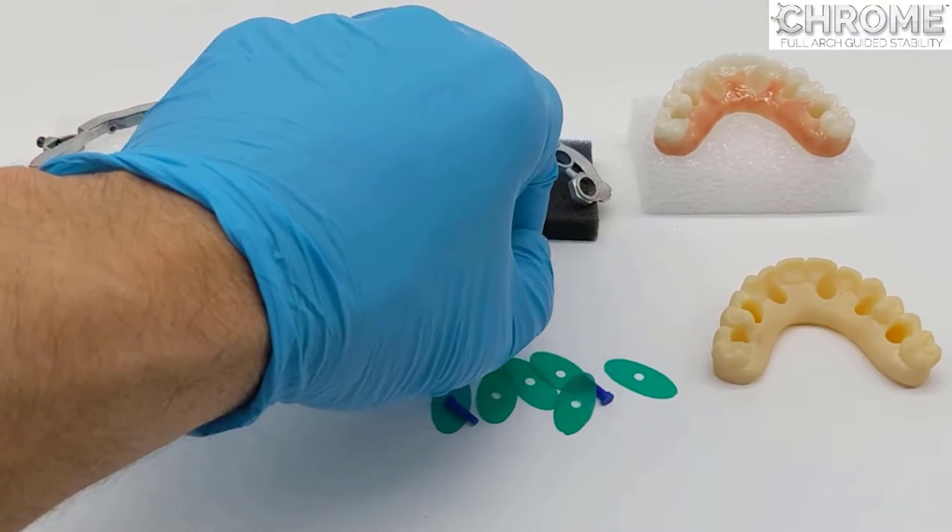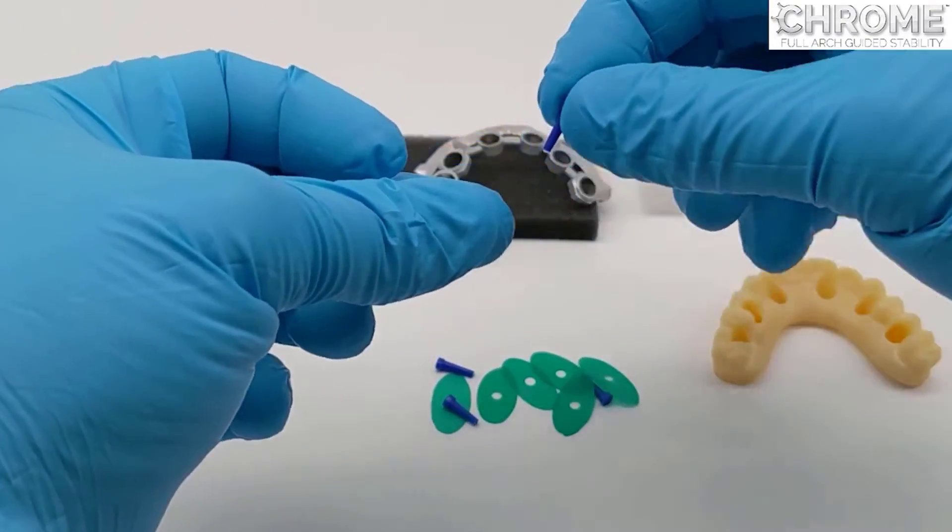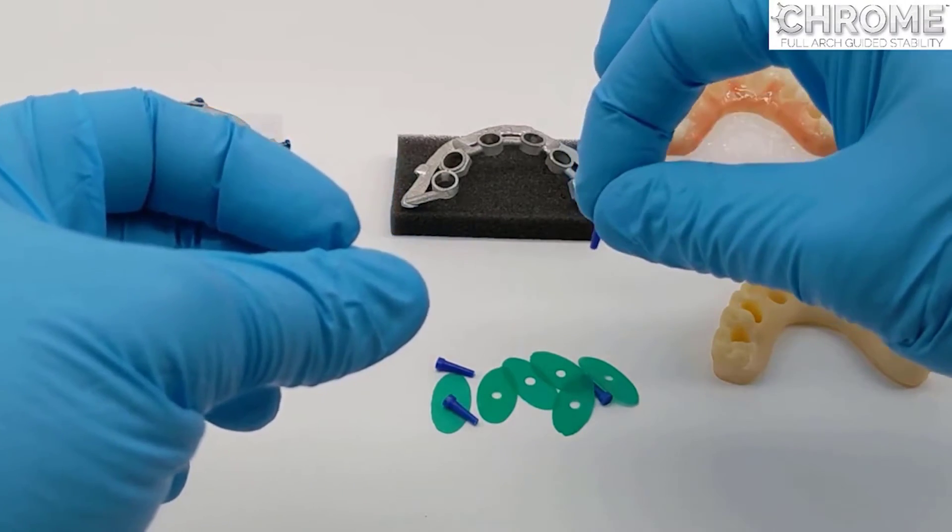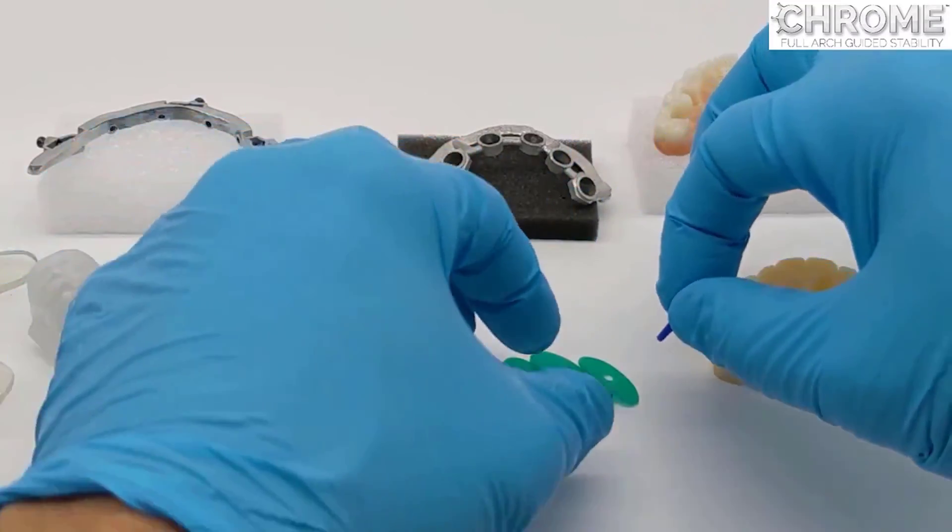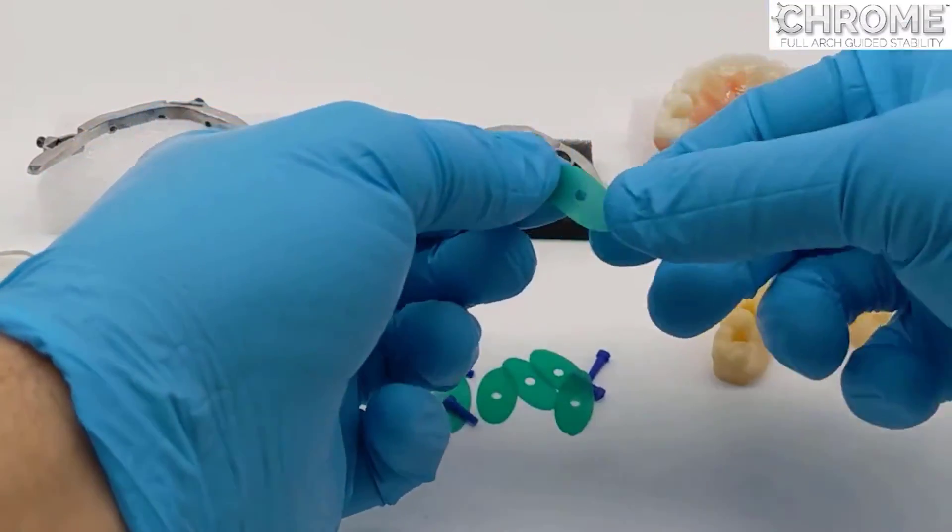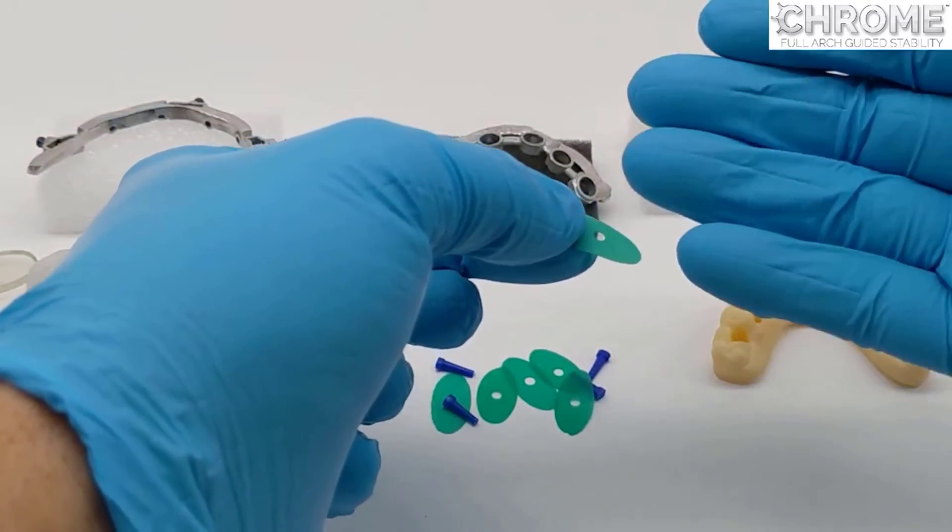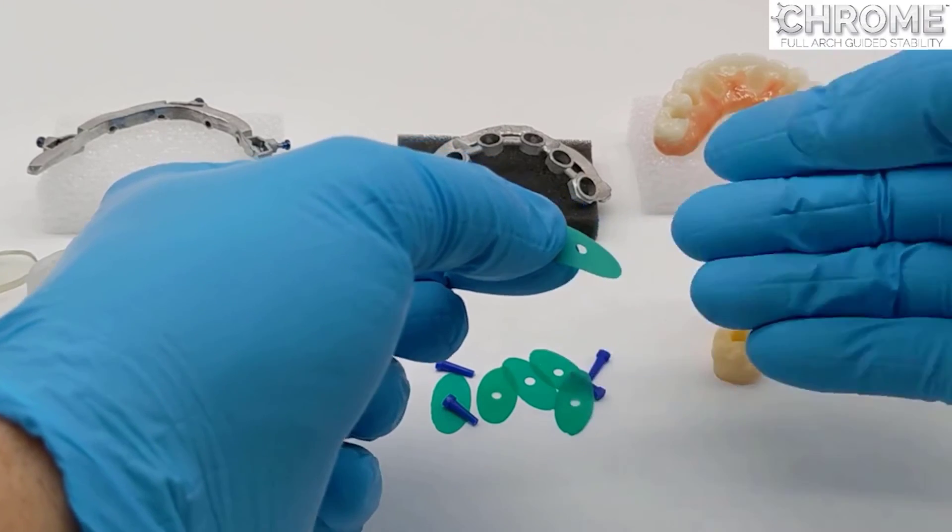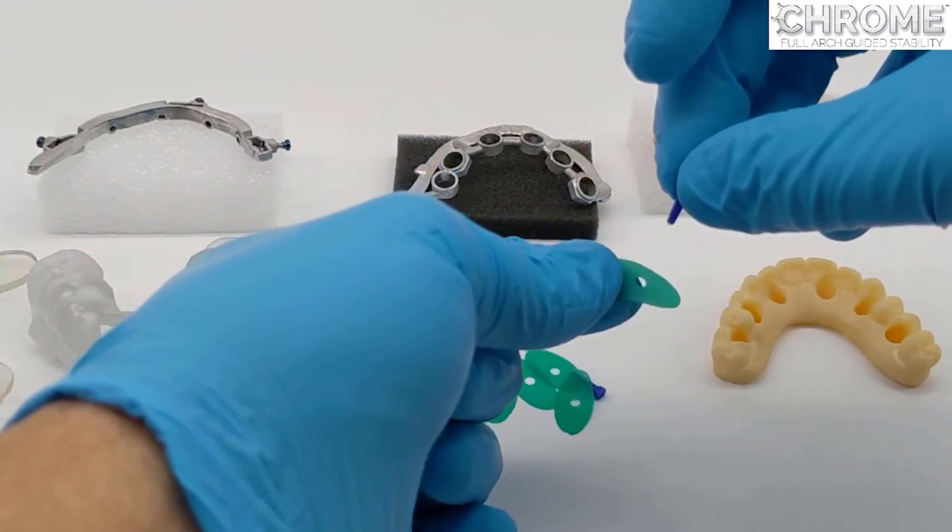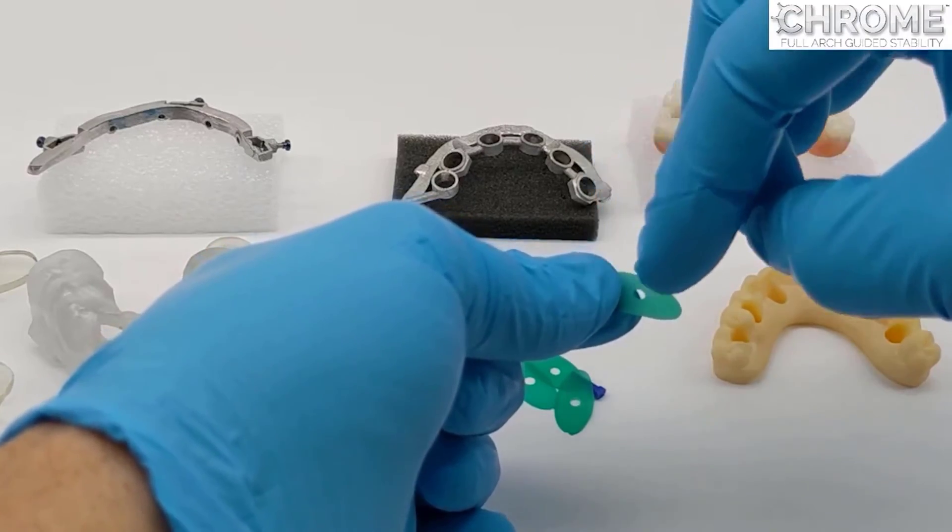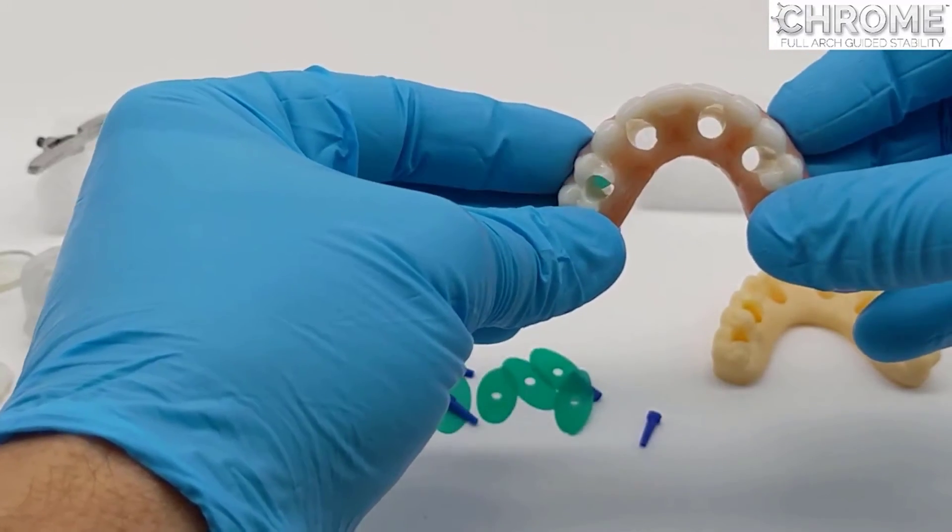Each case will come with six blue plugs and six green gaskets. The plugs are used to plug into the temporary cylinder to block it out so you don't get material down inside the temporary. The green gaskets will sleeve over the temporary cylinder to protect the mucosa and anything below the carrier guide. So it's double protection: a sleeve for underneath and a plug for the top when you backfill the hole around the temporary cylinder.